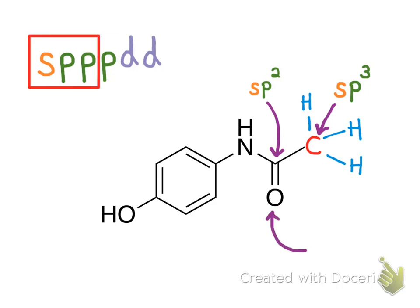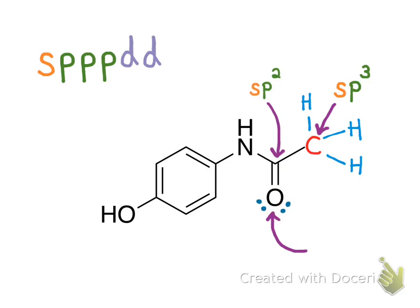Next, let's do this oxygen. Recall that in a skeletal structure, oxygen obeys the octet rule, meaning it has two lone pairs of electrons not explicitly drawn. Each lone pair counts as one electron domain, and the double bond counts as one electron domain, giving a total of three electron domains. This oxygen is therefore sp2 hybridized, and it has an unhybridized p orbital that comes into play with the double bond.